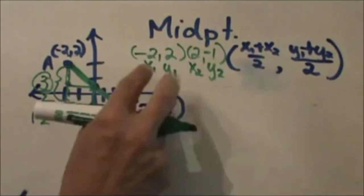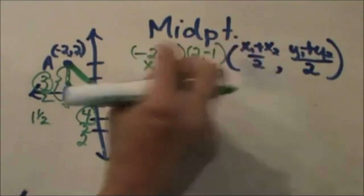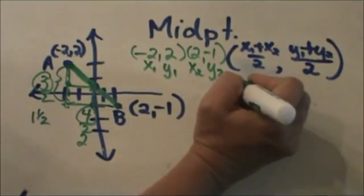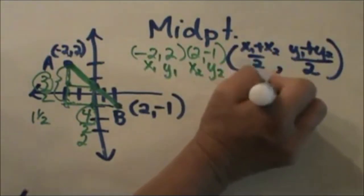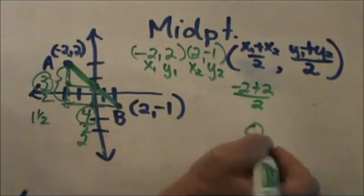Then I am going to plug it into my formula. I am going to take x1 plus x2 and divide it by 2. So I add my two x-coordinates together and I divide by 2. So negative 2 plus 2 over 2 is 0 over 2 or just 0.